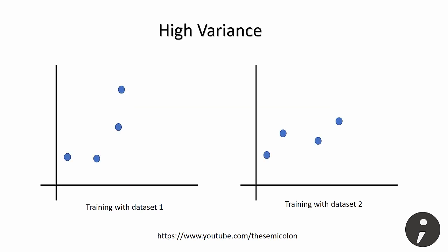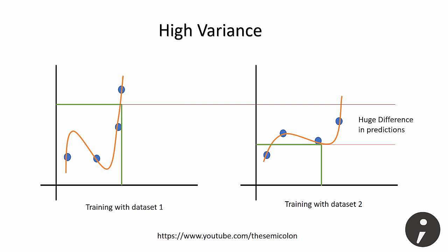And if we assume a polynomial curve, the difference in prediction is huge. The predictions may not even be true on test set. And situations like this give rise to variance error.